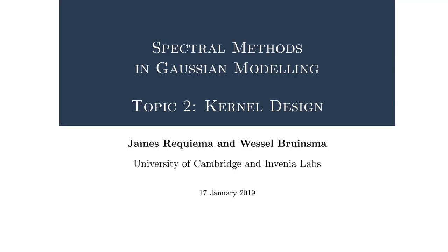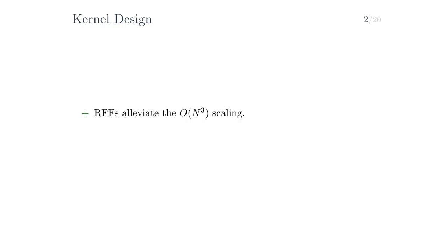Hello, and welcome to the second topic of our talk, which will be about kernel design. In the first topic, we encountered random Fourier features, which are a way of alleviating the cubic computational complexity that GPs have, by mapping the data to a randomized low-dimensional feature space and applying fast linear methods. Random Fourier features, however, do not help with the choice of kernel. Before you can apply them, you must first pick a kernel. We call the problem of choosing a kernel the problem of kernel design.